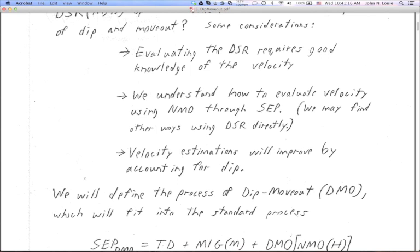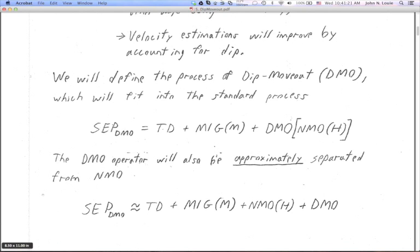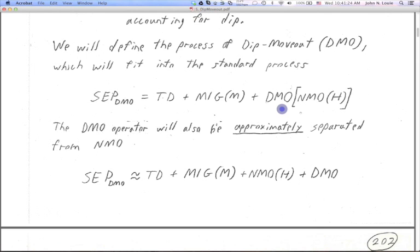Dave Hale defines a process of DMO, which fits into the standard process formally in this way. First, you do NMO and stack derived from the slopes you see in the CMP gathers, the big H's. Then you run it through DMO, which actually requires both big M and big H. Then you can run it through zero offset migration and time-to-depth conversion. That's the DMO version of the SEP.